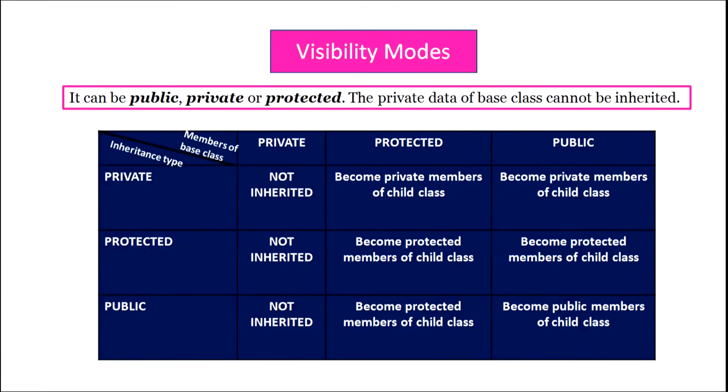Visibility modes: there are three types — public, private, or protected. Looking at the table, if the type of inheritance is private, the private members of the base class will not be inherited, and the protected members of the base class become the private members of the child class.